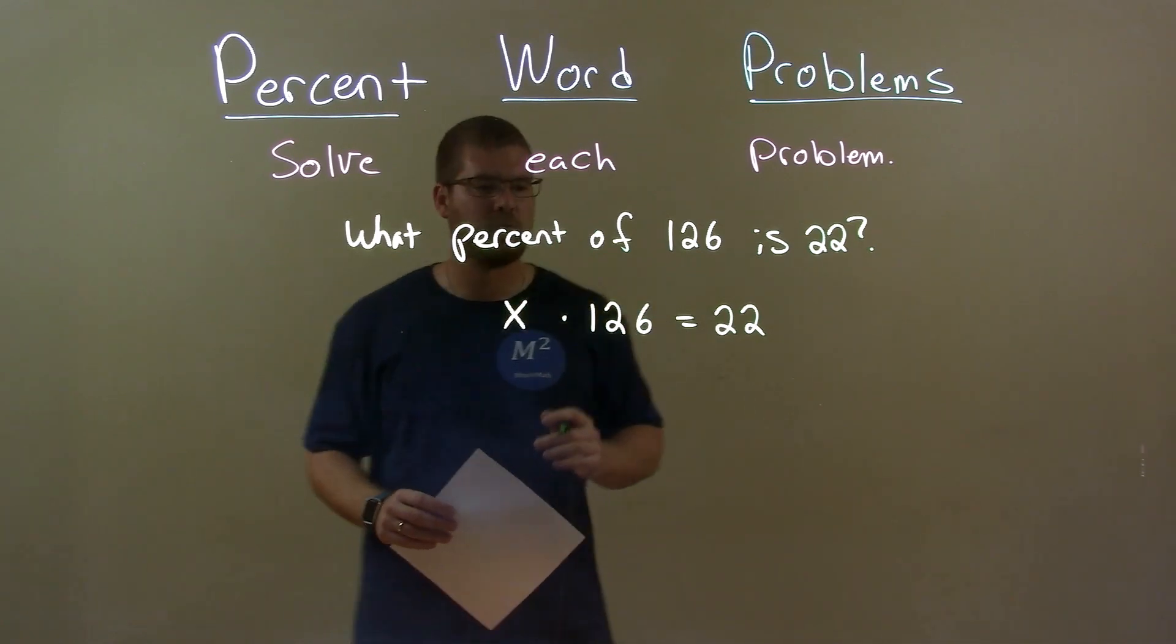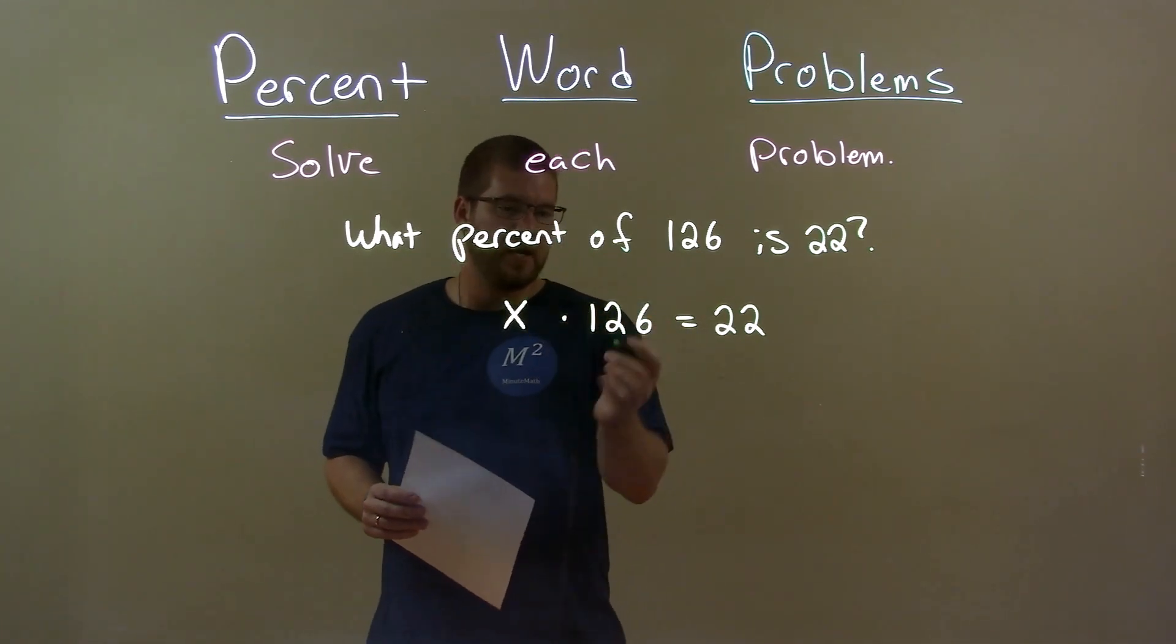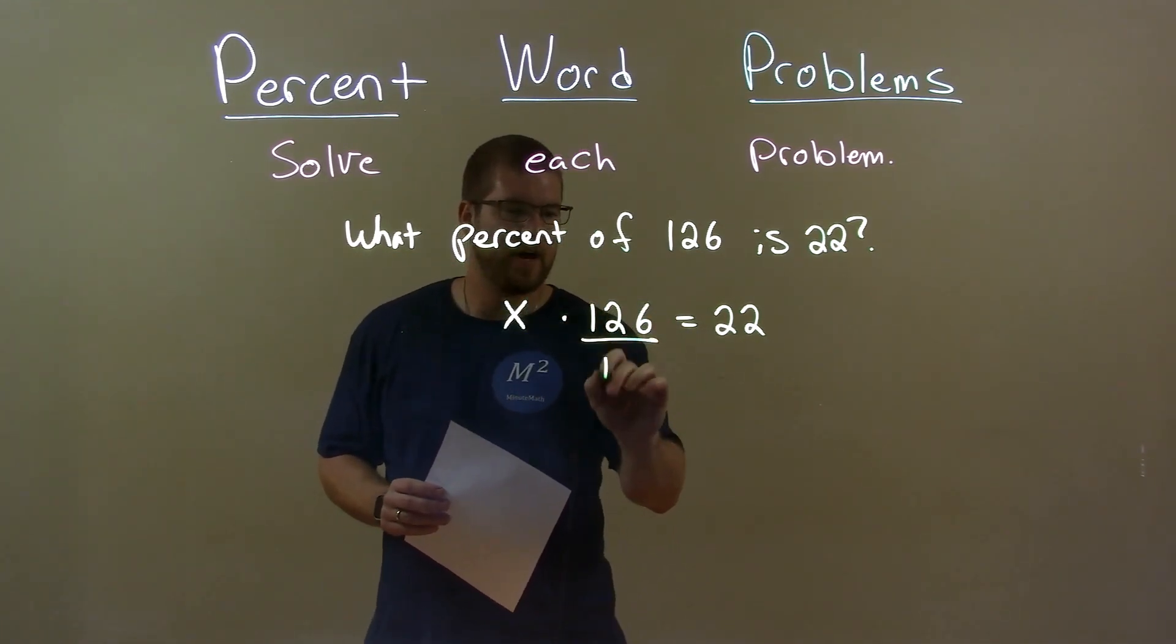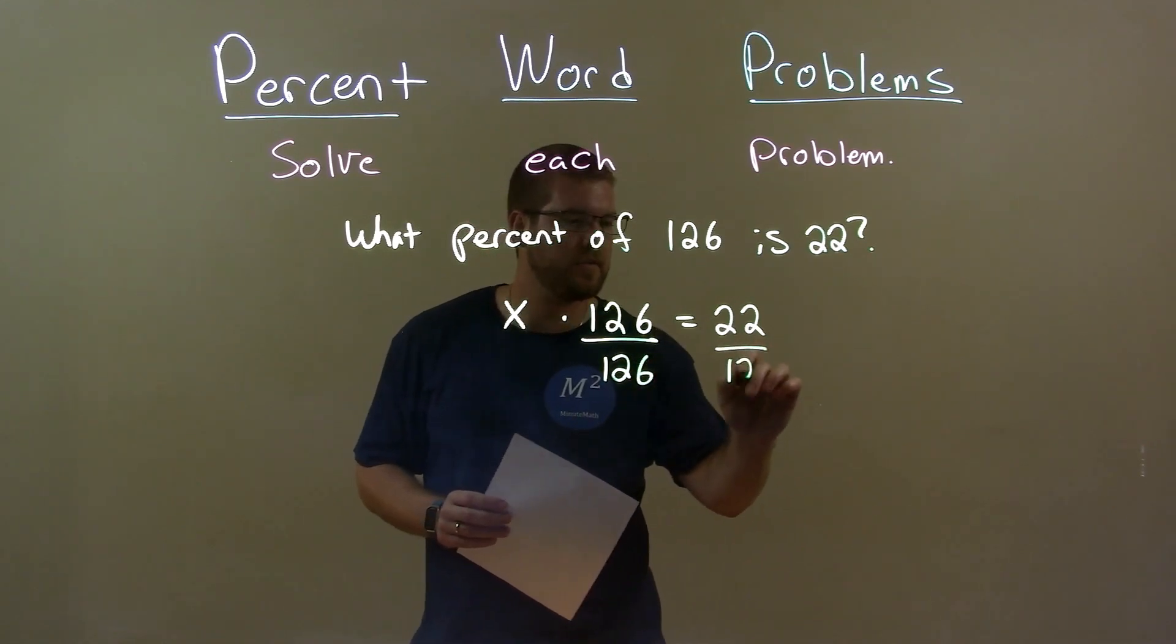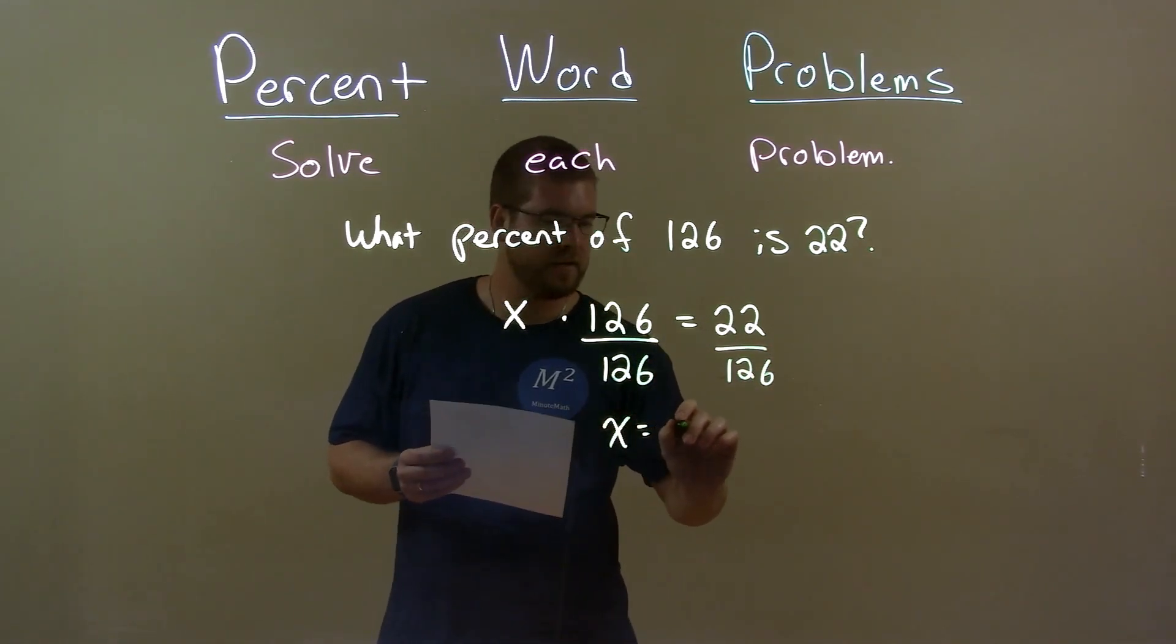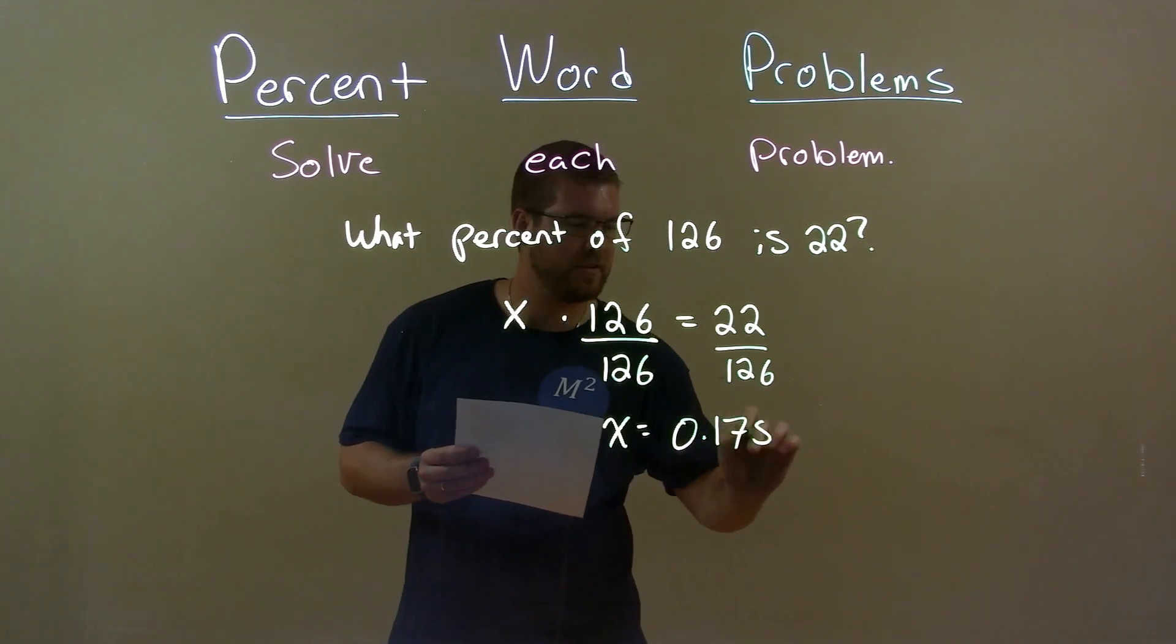Now we're going to solve for x. Multiplication, opposite of that is division. Divide by 126 on both sides and I'm left with x equals 0.175.